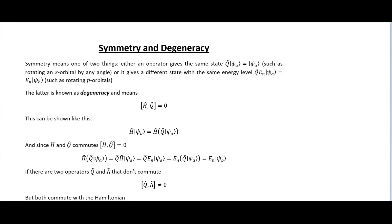This video is going to be a quick discussion of symmetry and degeneracy and how we can get degenerate states because of symmetry. Symmetry means one of two things: the operator gives the same state - so you act on this state and it just gives the same state. This would be something like rotating an s orbital, which is just a sphere, so you can rotate it by any angle and it will just be the same function.